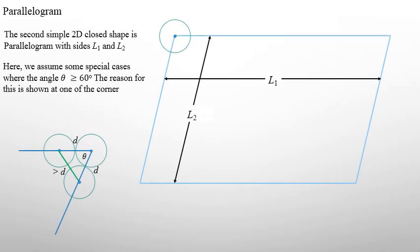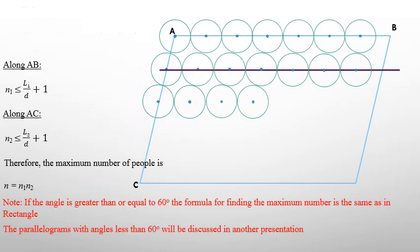The next simplest shape is a parallelogram, but in this case we have to be careful. To simplify the analysis in this video, I assume that any angle is greater than or equal to 60 degrees. The reason is that if the angle is smaller than that, those two circles would be overlapping each other, meaning positions need to be shifted — which I haven't yet included in my calculations and would require another video. But in the directions of L1 and L2, you have exactly the same formulas as before, giving N1 and N2, and the maximum number in the parallelogram is N1 times N2.